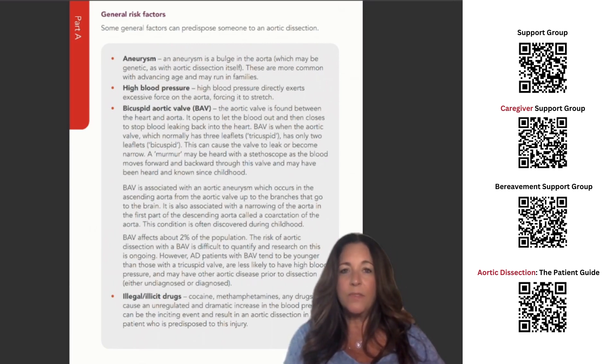Bicuspid aortic valve, BAV. The aortic valve is found between the heart and the aorta. It opens to let the blood out and then closes to stop blood leaking back into the heart. BAV is when the aortic valve, which normally has three leaflets, tricuspid, has only two leaflets, bicuspid.